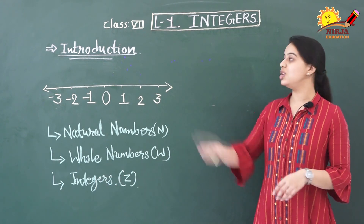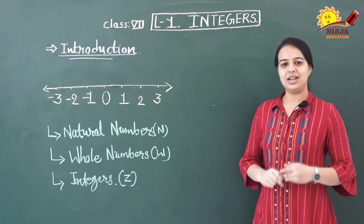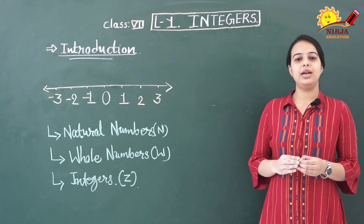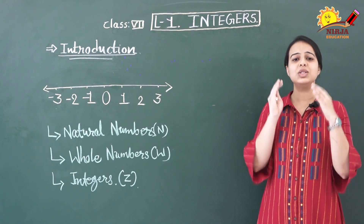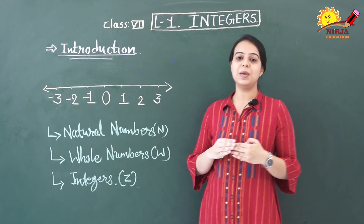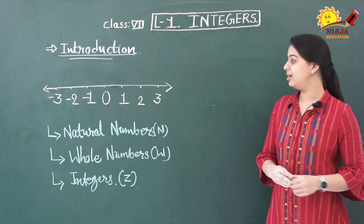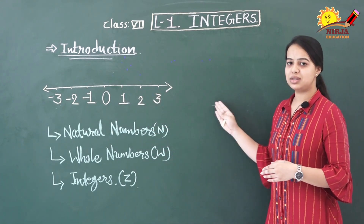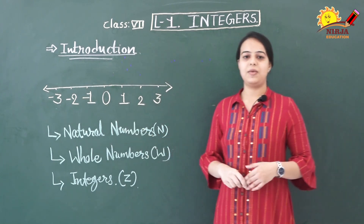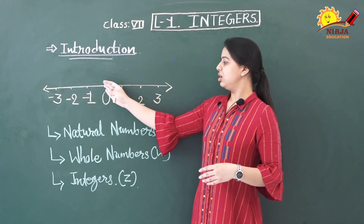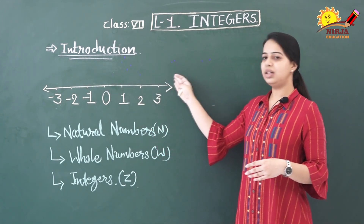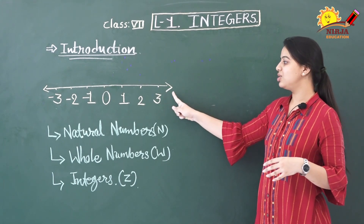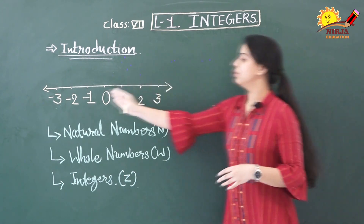What is an integer? Integers are one kind of numbers, and as soon as we hear this word 'numbers' we have a visualization of number lines, because every number we can represent using the number line. Here I have drawn one number line indicating 0, with all the positive numbers on the right side and all the negative numbers on the left side. This sign shows that it is still extending on both sides.